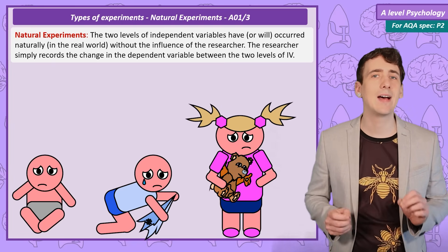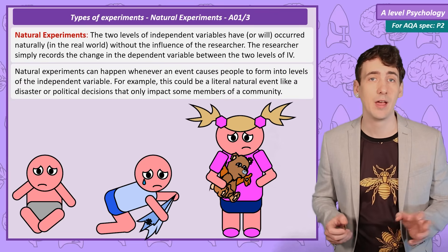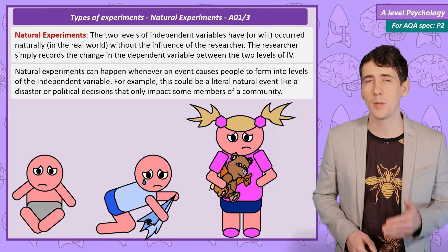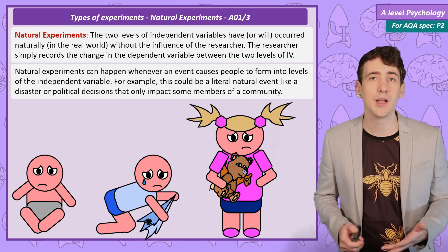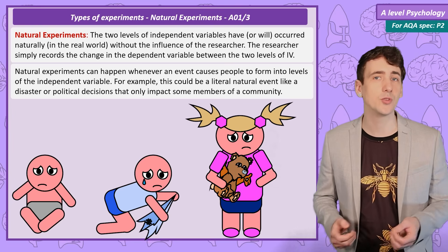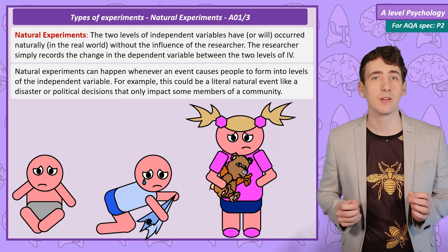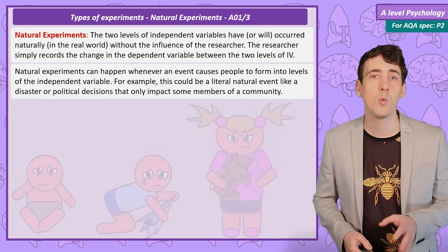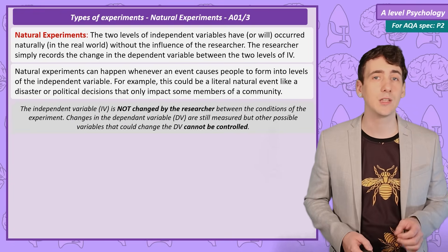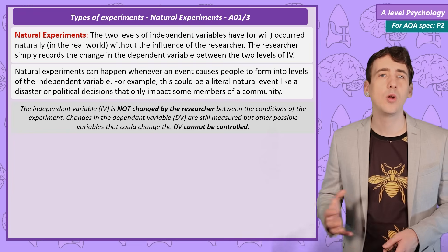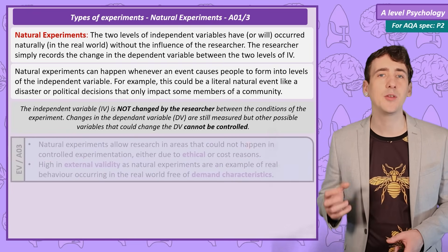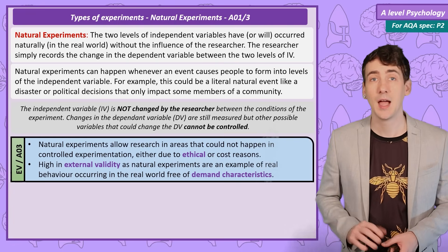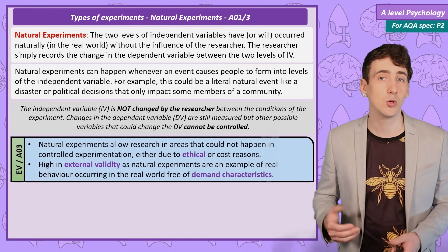You could never conduct this as a lab experiment for ethical reasons. But this did happen to children in Romania in the 1980s, and a researcher called Rutter followed these children up as they grew and recorded the effect of deprivation on their development. Watch my video on the Romanian orphan studies if you want to know what Rutter found. One strength of natural experiments is that they allow research into areas that can never be done otherwise, either due to ethical reasons like Rutter's study, or cost.